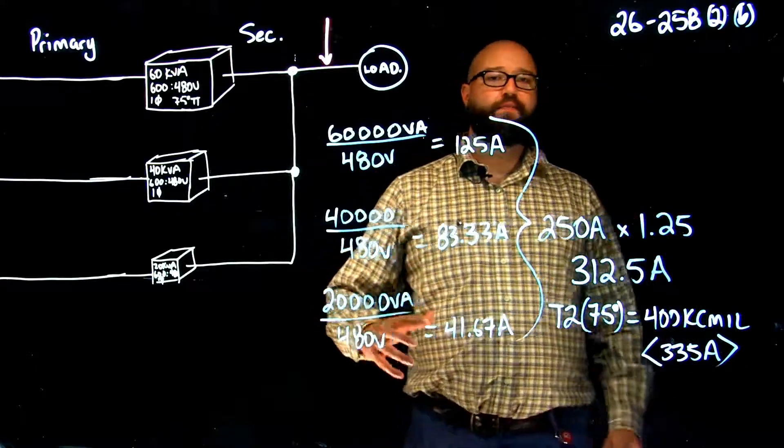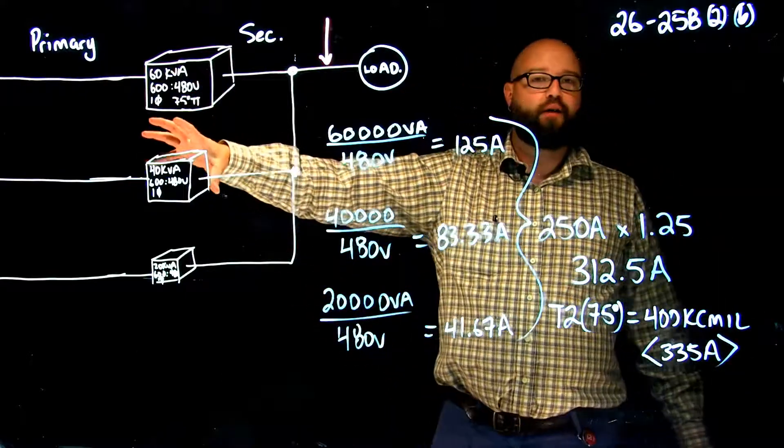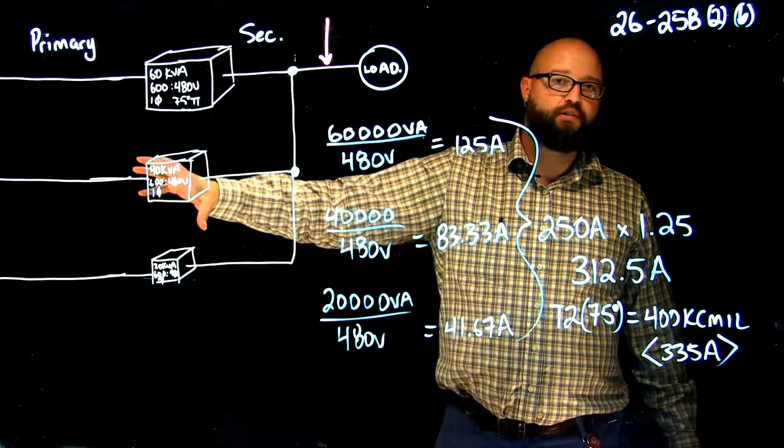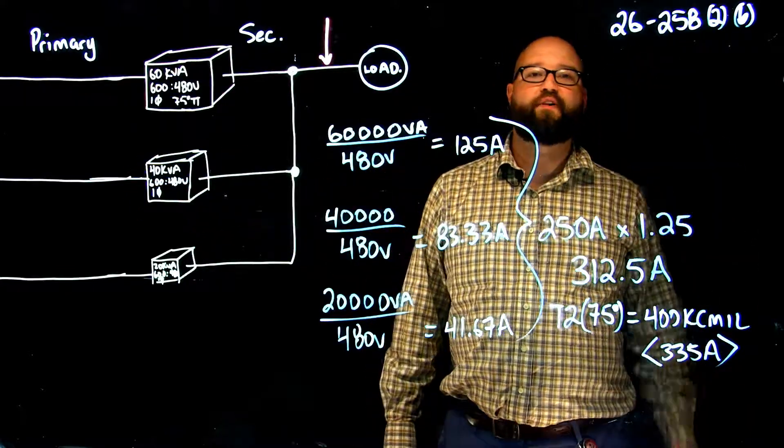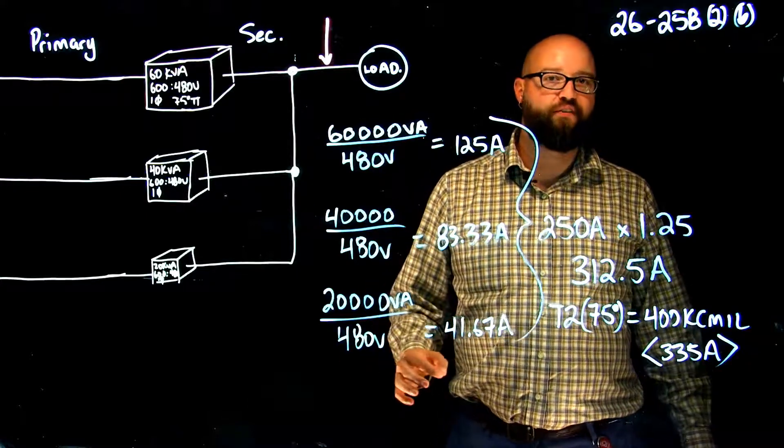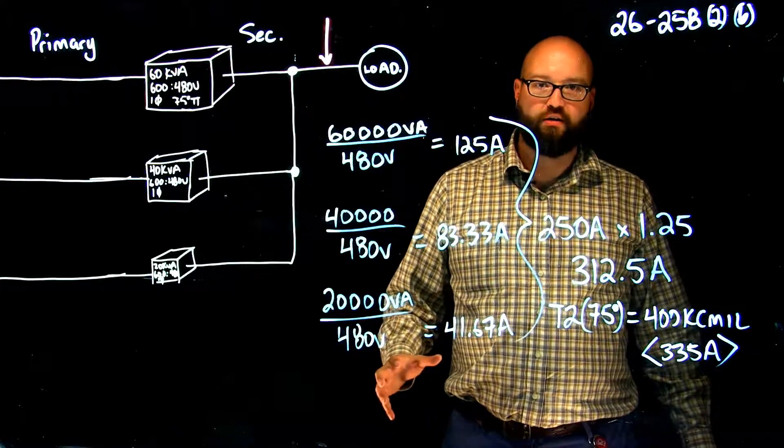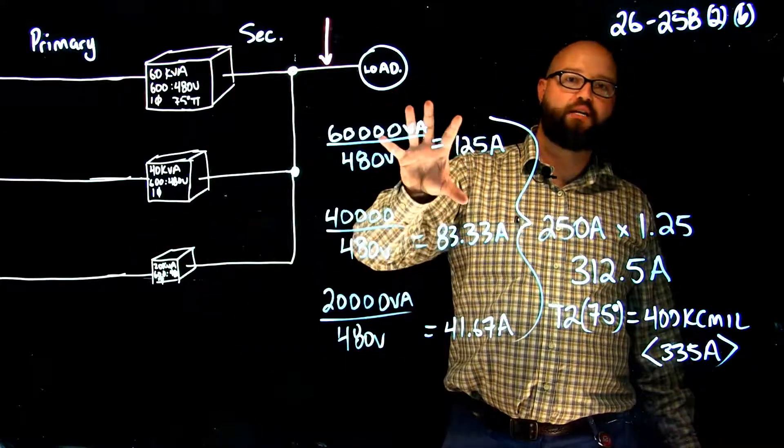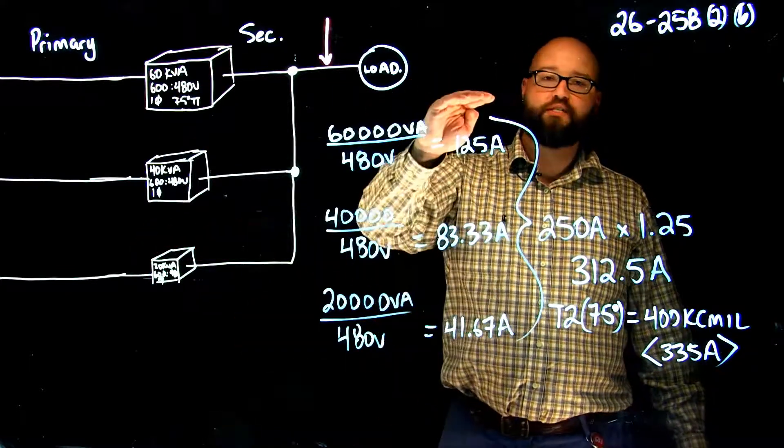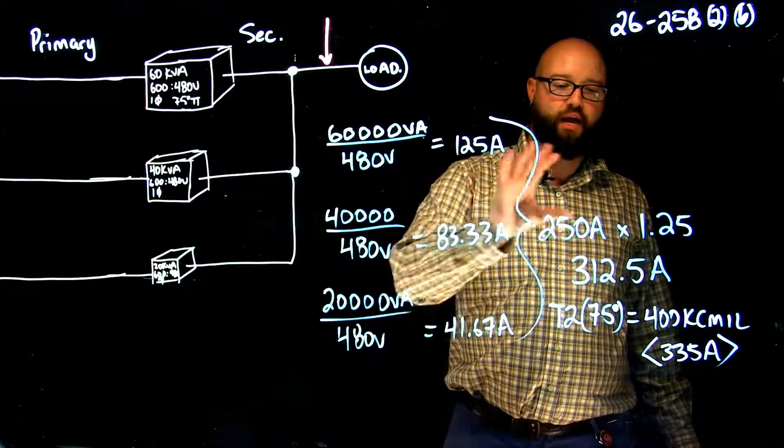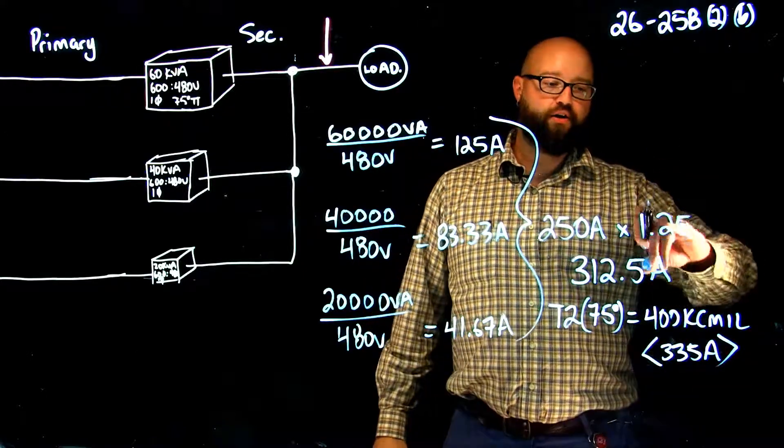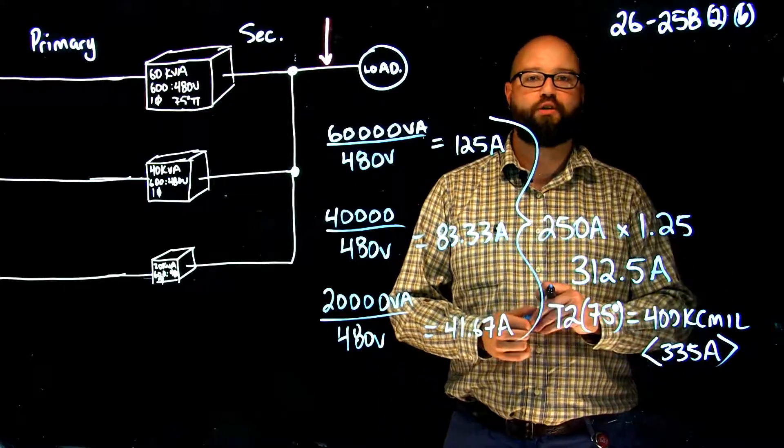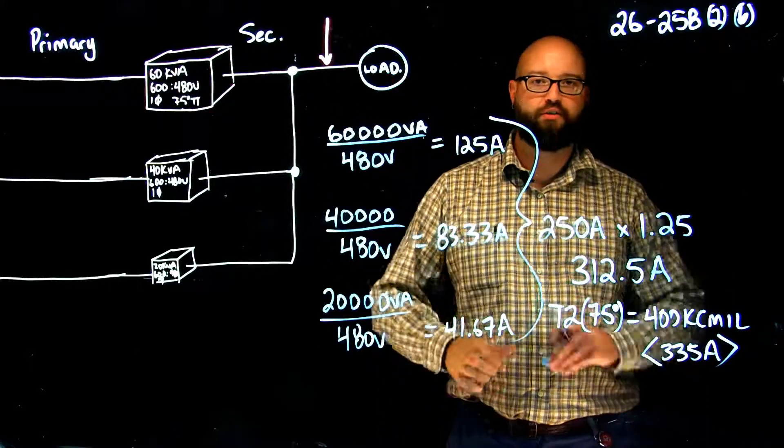So again the main difference between primary parallel and secondary parallel connections: on the primary side, according to 26.258.1b, we are going to take 125% of the largest rated current and then add the rest of the rated currents. When we work with the secondary parallel connection, we are going to take all those rated currents, add them together, add 125%, and that's the number that we take to table 2 to choose our secondary parallel conductor size.